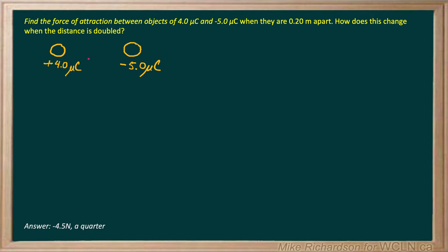The force of attraction between two objects of 4 microcoulombs and negative 5 microcoulombs when they're 0.2 meters apart. So I've got a positive 4 microcoulomb charge on the left and a negative 5 microcoulomb charge on the right, and we know that opposite charges attract.